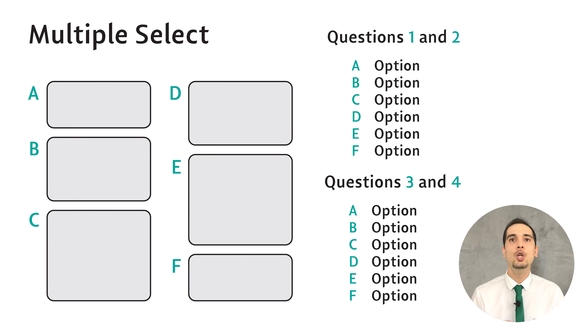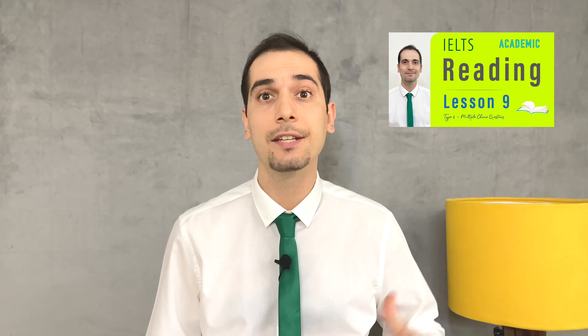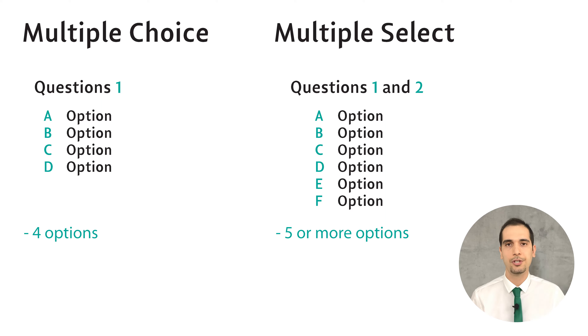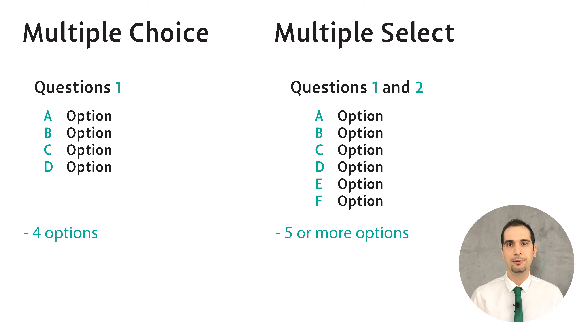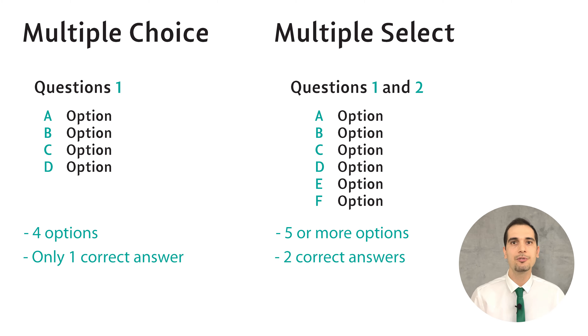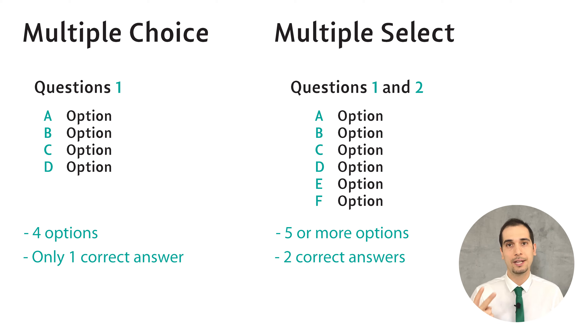Multiple select questions look like multiple choice questions, but there are great differences between them. The first difference is that in multiple choice questions — which I taught in lesson 9 — you have four options, but in multiple select questions you have five options. Difference number two: in multiple choice questions you have to choose only one correct option, but in multiple select questions you have to choose two correct options.